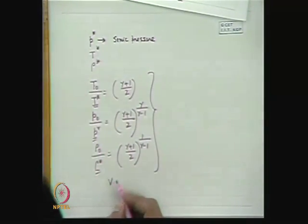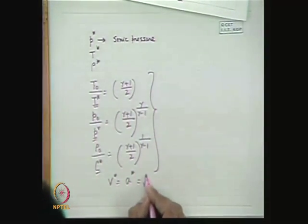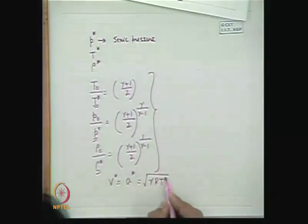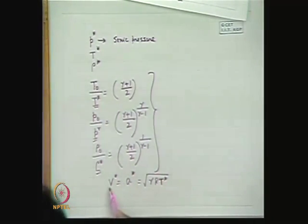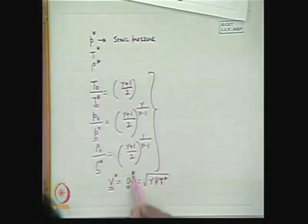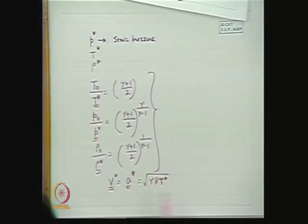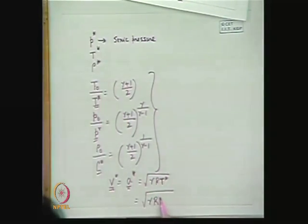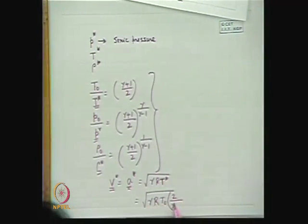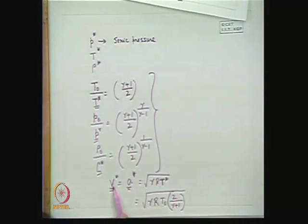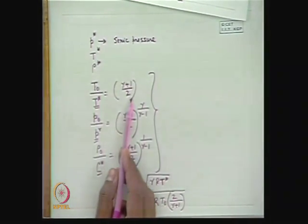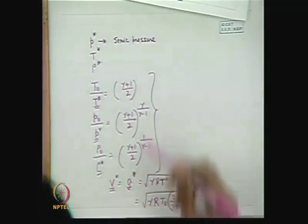The sonic flow velocity is V* = A* = √(γRT*), where T* = T₀ · 2/(γ+1). So the sonic temperature can also be written as T* = 2T₀/(γ+1). These sonic properties are defined at the section where Mach number 1 is reached, where the fluid velocity equals the acoustic velocity at that condition.